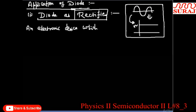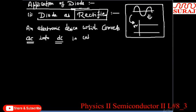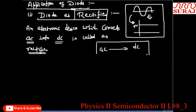Application of Diode: A diode is a rectifier. It is an electronic device which converts alternating current (AC) into direct current (DC). It is called a rectifier. Rectifier का काम क्या होता है? कि ये AC को DC में convert करता है — alternating current को direct current में convert करने का काम करता है।